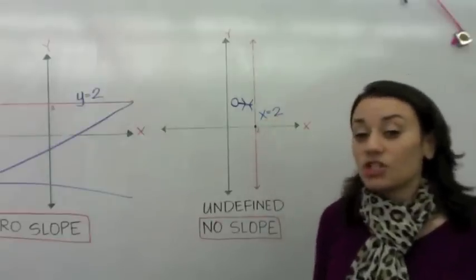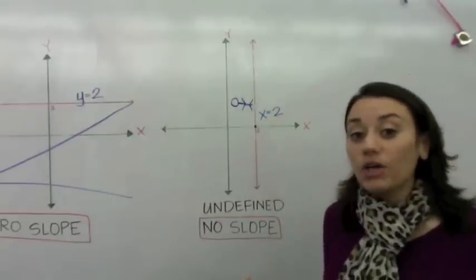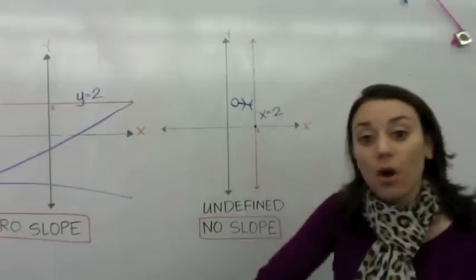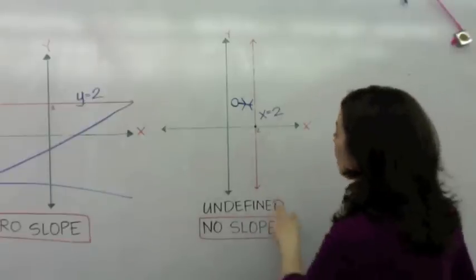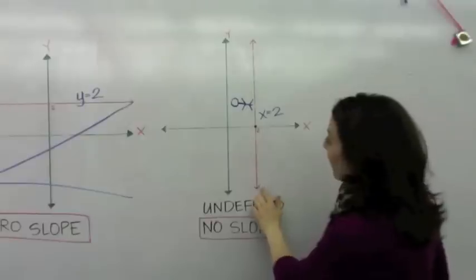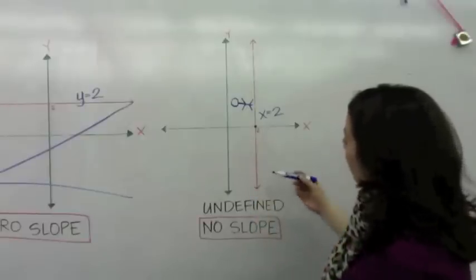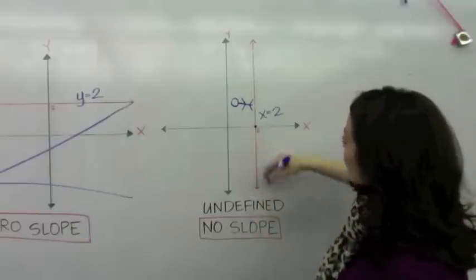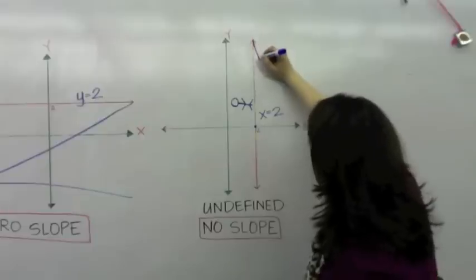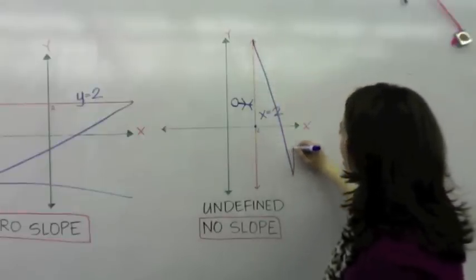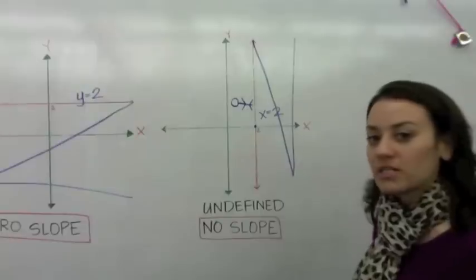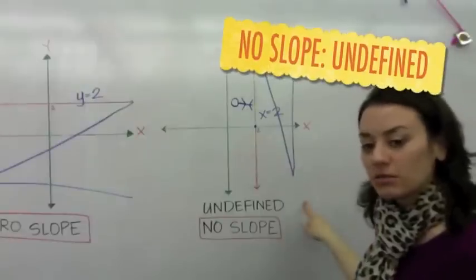Very good. So how will you remember no slope? Well, this can be the letter N — it's already up and down, and then you make the letter N for no slope.